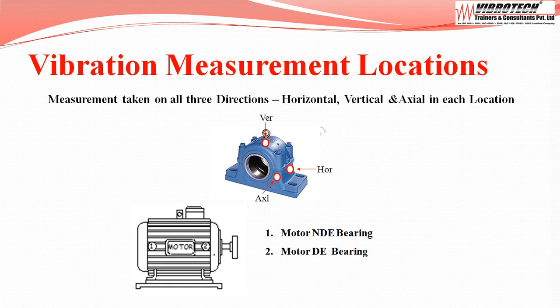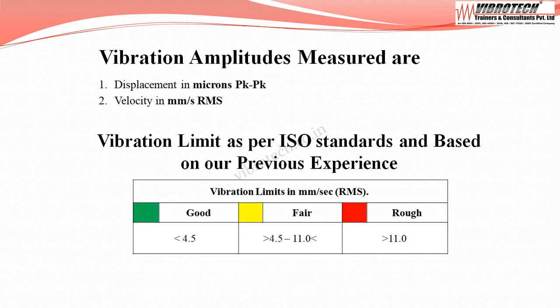Vibration measurements are taken in all three directions — horizontal, vertical, and axial — at each location. Measurement locations are the motor non-drive end bearing and motor drive end bearing. Vibration data are collected in terms of displacement in microns peak to peak and velocity in mm per second rms.